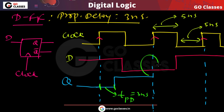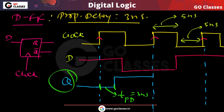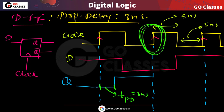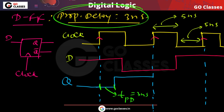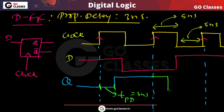At the next rising edge, our input D is already 0. So our output will also become 0, but it will take 3 nanoseconds to do so. When this rising edge arrives, the flip-flop works, and because the propagation delay is 3 nanoseconds, the output will go to 0 after 3 nanoseconds. Again, this is the propagation delay.